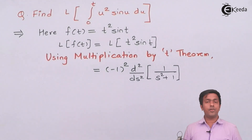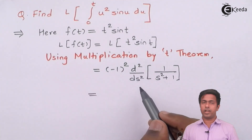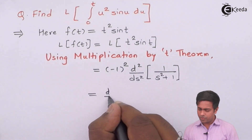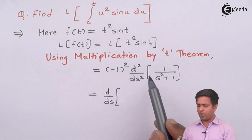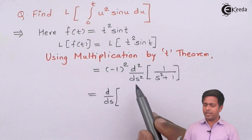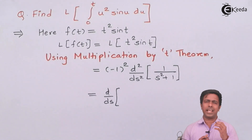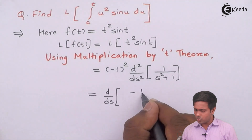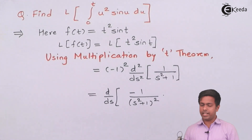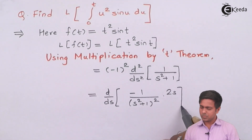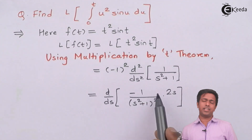Since (−1)² = 1, we need the second-order derivative. Let's find the first derivative first. I keep one d/ds outside and differentiate 1/(s² + 1). The derivative of 1/x is −1/x², so the derivative of 1/(s² + 1) is −1/(s² + 1)² multiplied by the derivative of (s² + 1), which is 2s. This gives −2s/(s² + 1)², and taking −2 outside, we get d/ds of [s/(s² + 1)²].